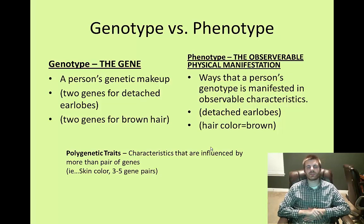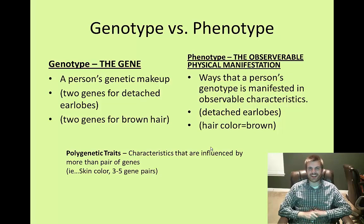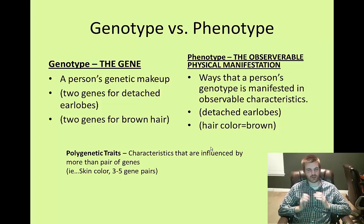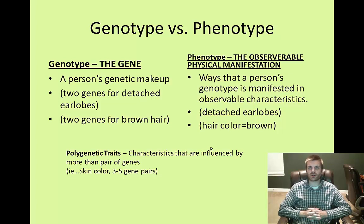Some traits are going to be influenced by more than one pair of genes, and these are referred to as polygenic traits. The greatest example of this would be skin color. Not everyone is exactly the same shade — someone could be very tan but still be deemed a white person, or very pale and still be deemed a white person, and the same applies for other groups. So skin color is based on a multitude of gene pairs, somewhere in the range of three to five.